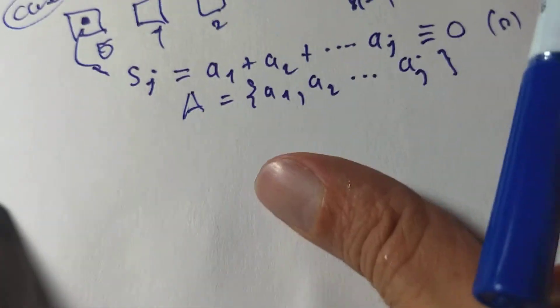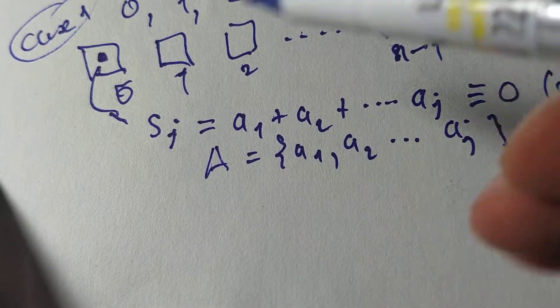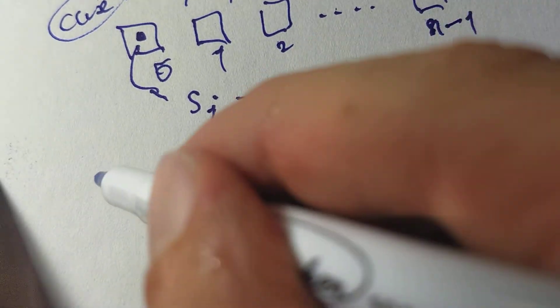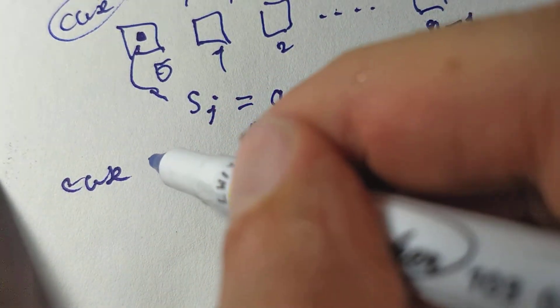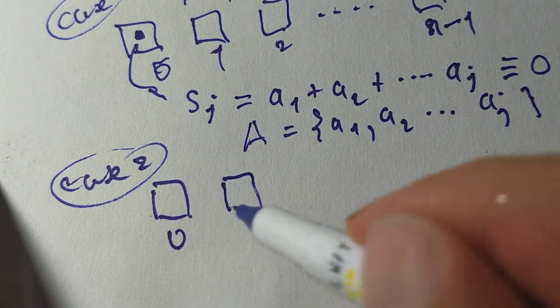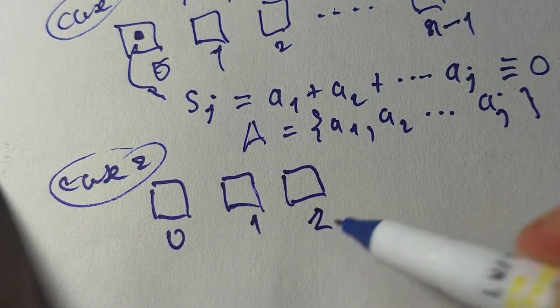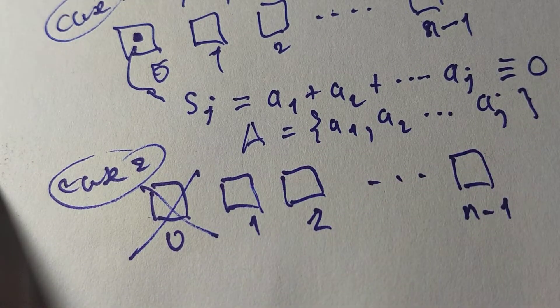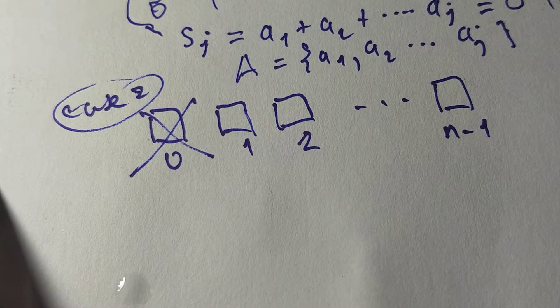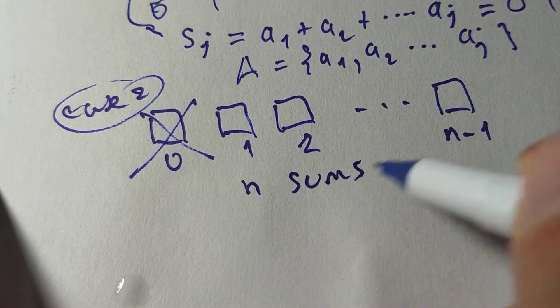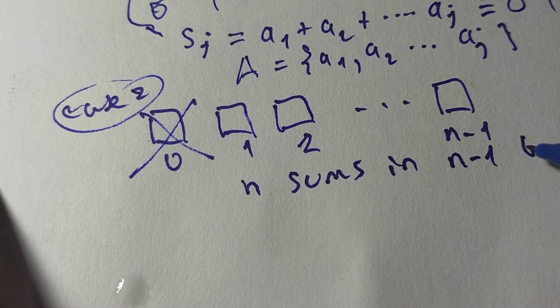In case 2, case 2, there's nothing in this little box, in the first one, in the 0 box, nothing in there. Okay, now what? Well, now I've got to pack N sums in N minus 1 boxes.